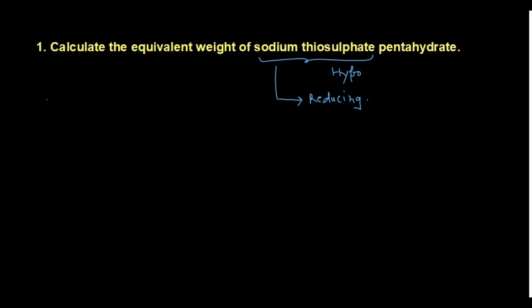The chemical formula for sodium thiosulphate is Na₂S₂O₃. If it is anhydrous it is in this form; if it is hydrated, five water molecules are also present. The molecular weight of sodium thiosulphate pentahydrate is 248.18, which you can check through your textbook.